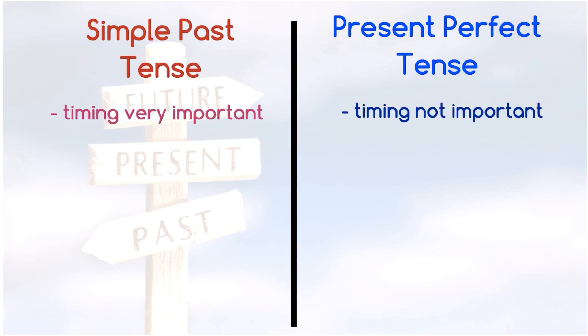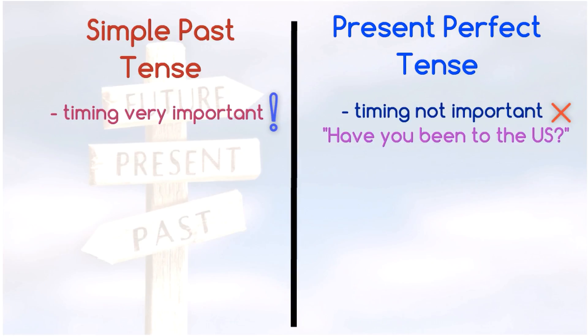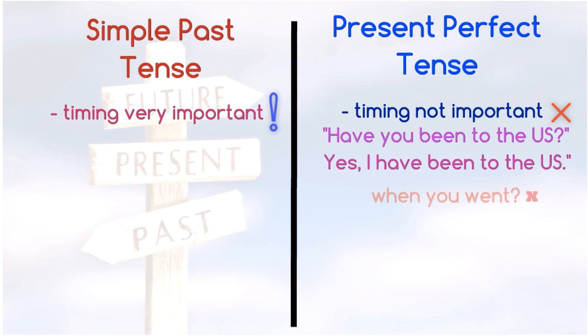Notice the difference — the timing of the action is not important in the present perfect tense. For example, 'Have you been to the US?' to which the answer can be 'Yes, I have been to the US.' The questioner is not interested in knowing when you went, but if you went to the US. For such a situation, use the present perfect tense.